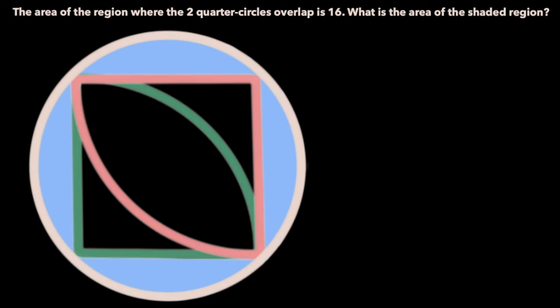In this video, we're going to be taking a look at the following problem. The area of the region where the two quarter circles overlap is 16. What is the area of the shaded region? I'll have the link to where I found this problem in the description below, and with that being said, let's jump right into the solution.